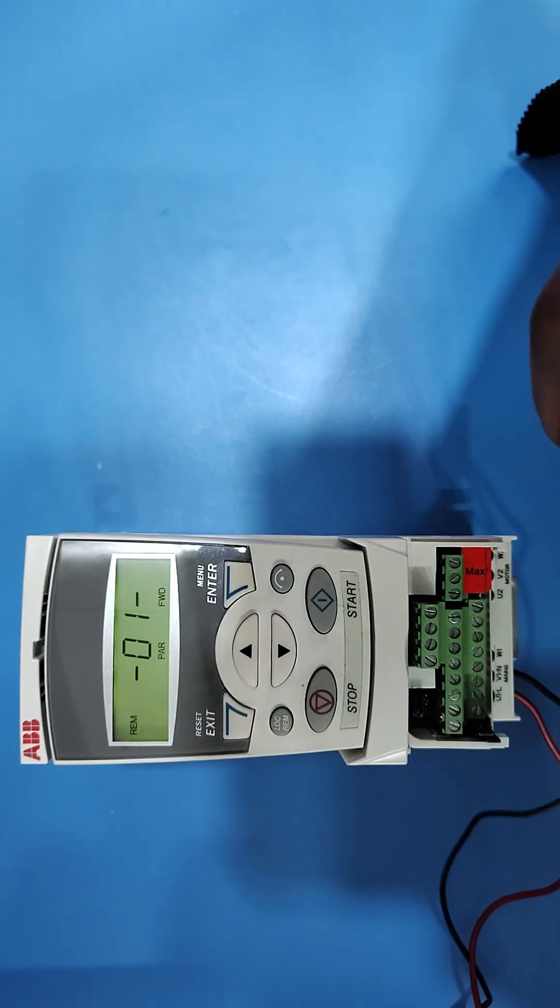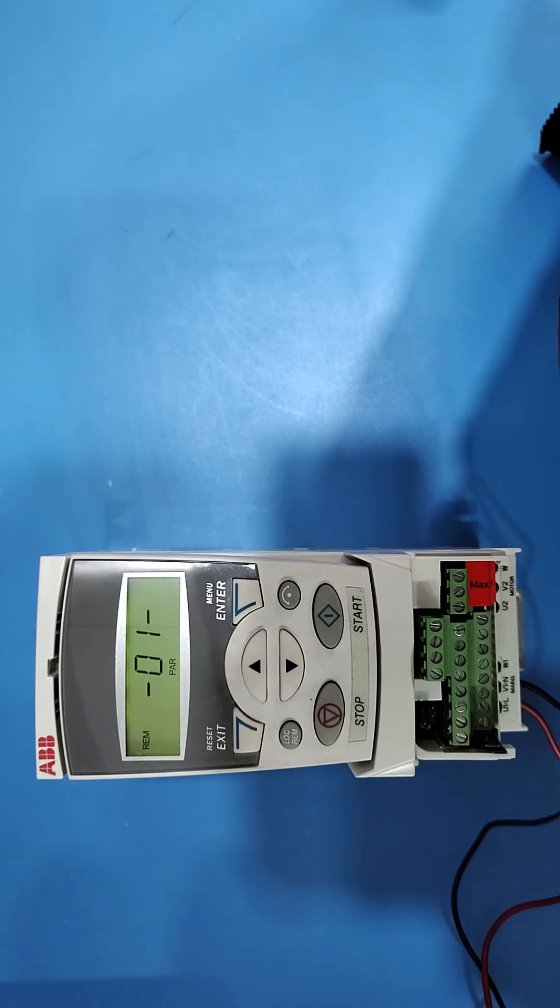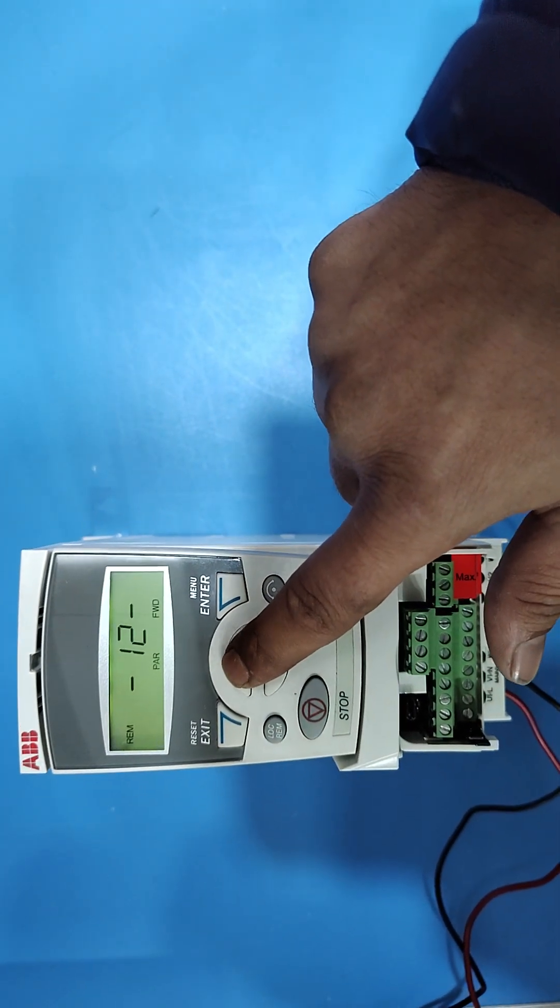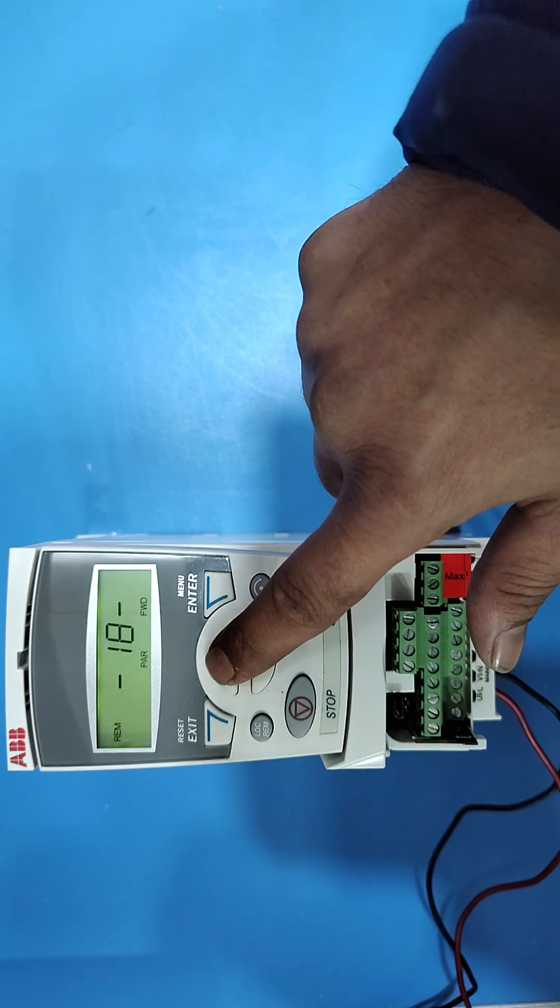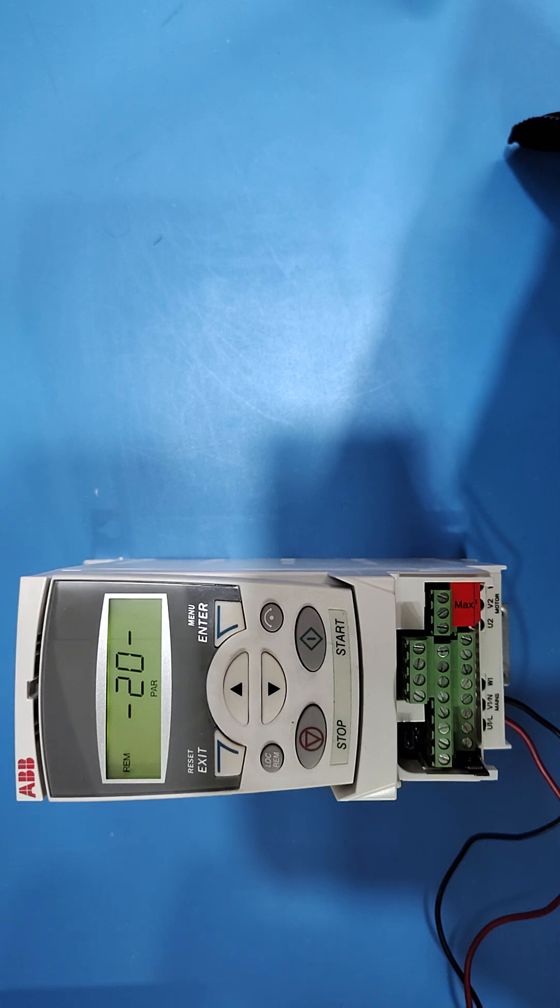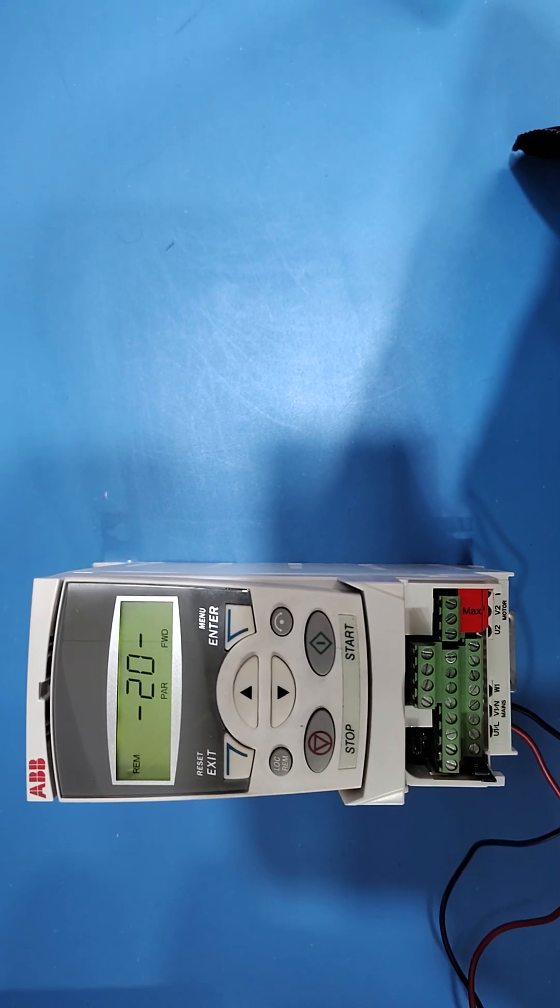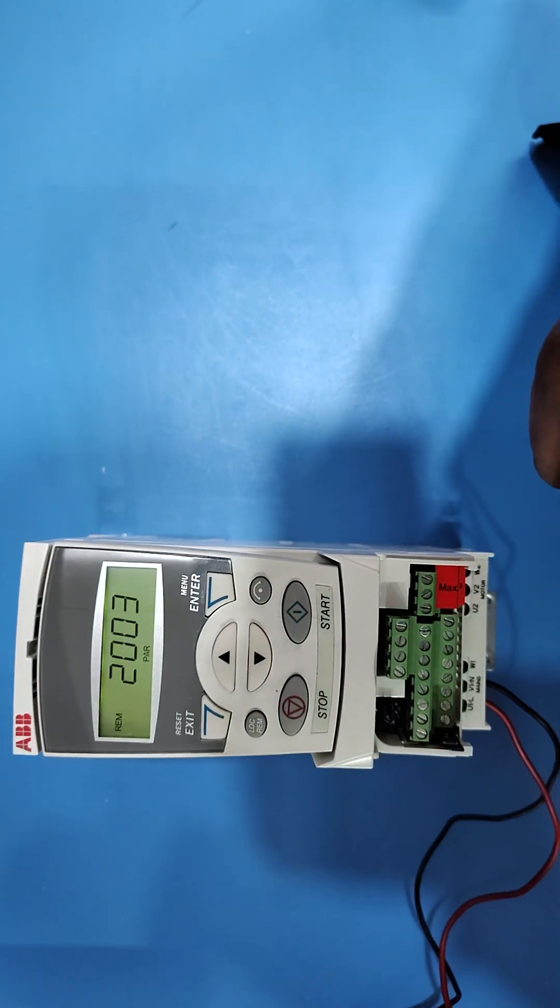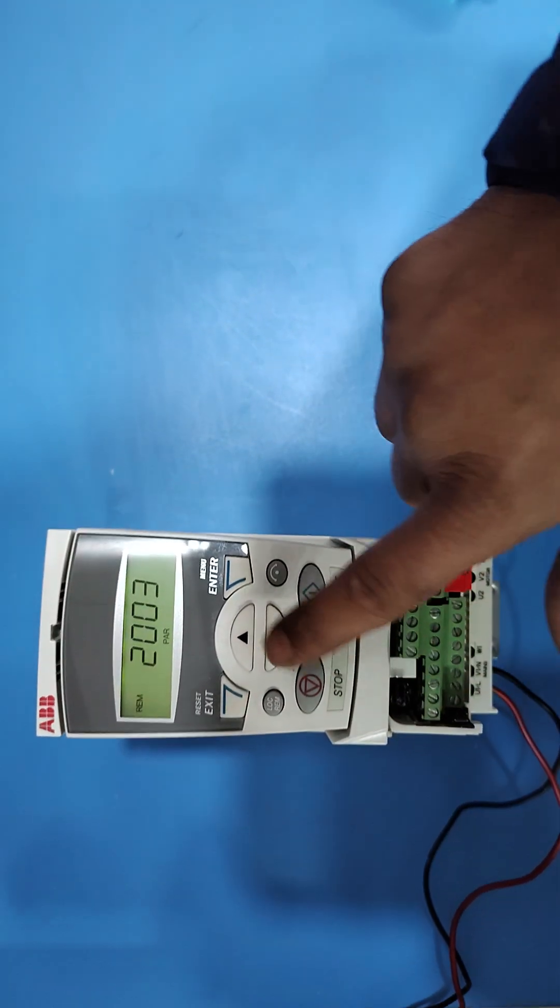You'll see 01 group. Go to group number 20 by pressing up key. Press up key and go to group number 20. When you reach group number 20, press enter key. You'll see 2003. Press up key and go to parameter number 2007.